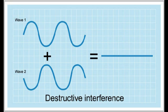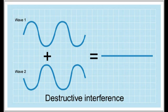Sound waves are created by compressing air and longitudinal waves, which are shown graphically as sine waves. Constructive interference happens when two crests of a wave line up. Destructive interference occurs when a crest and a trough line up, which cancels out noise.